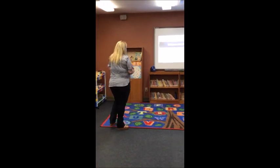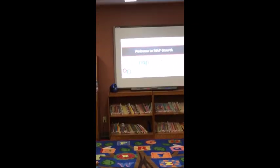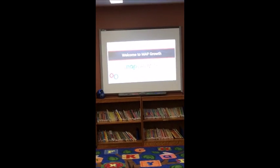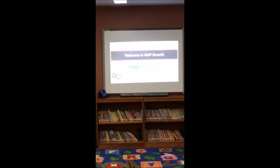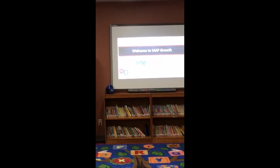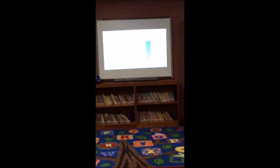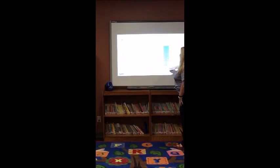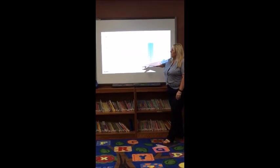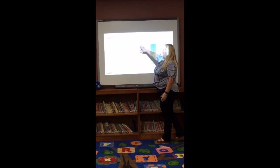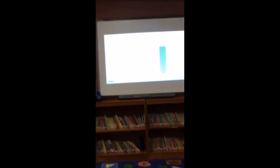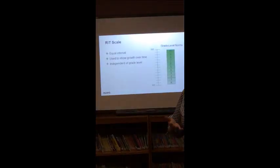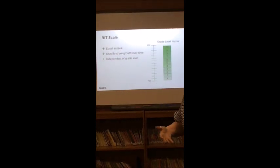So MAP growth, we love it because of what it gives us as far as information goes. Unlike the other tests, it gives us a grade level norm. And so through kindergarten to 10th grade, we have a RIT score, which is between 120 and 250. So when you have your baby and you go to the pediatrician and they give you that 95th percentile for weight or height or length, this is kind of the same idea.